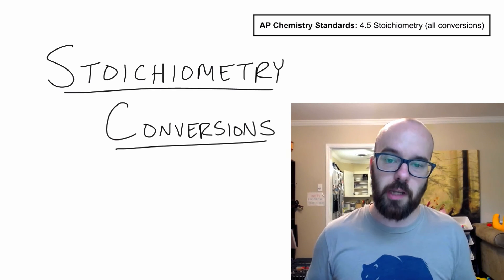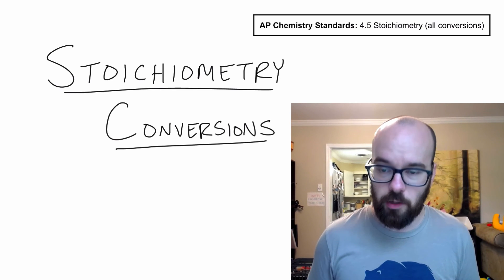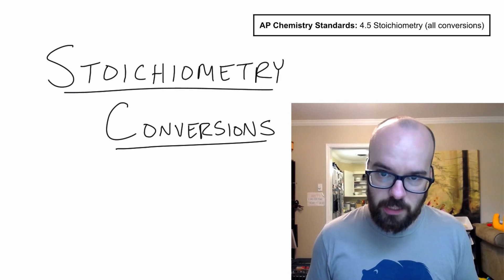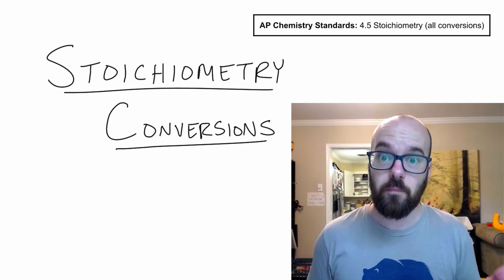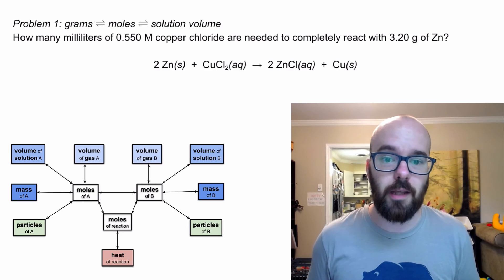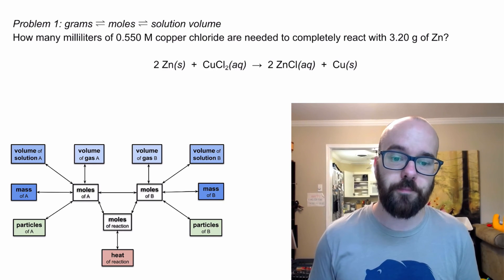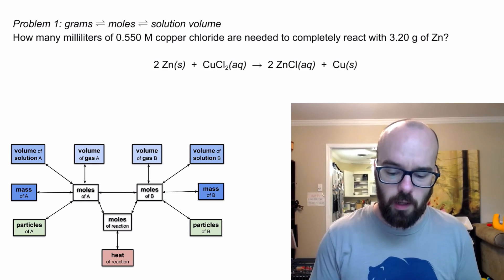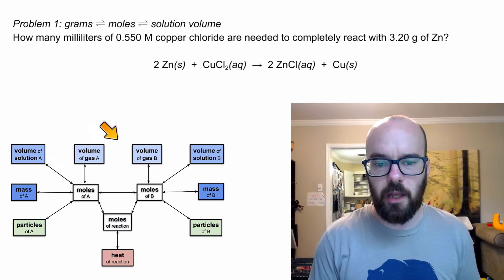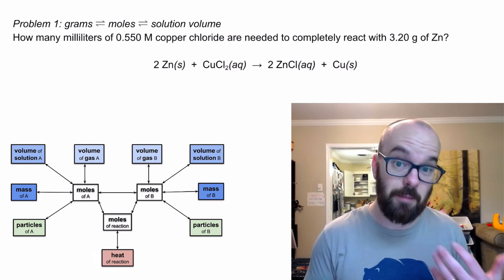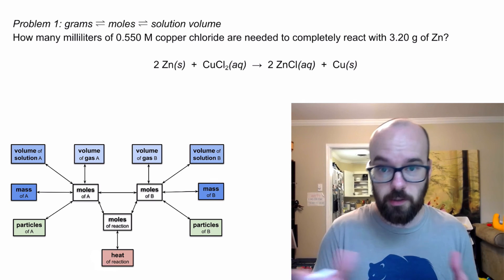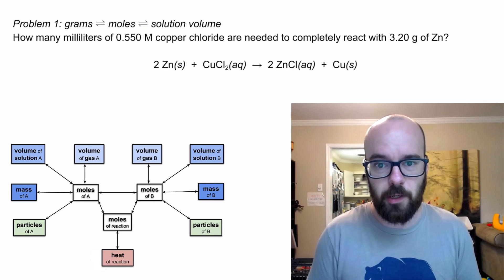In this video, I'm going to go through some stoichiometry conversion problems using all the different types of conversions we might need to do in AP Chemistry. I'm going to include the stoichiometry map down here on the left, and I use that to kind of guide my thinking of what conversions I'm doing so I can see the big picture of it.